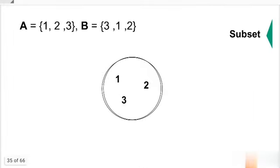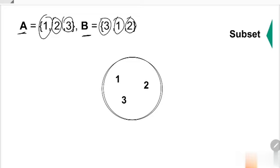For example, this one. A is a subset of B, since all elements of A can be found in B. So you write it like this. A is a subset of B. But sir, that actually means that B is also a subset of A.